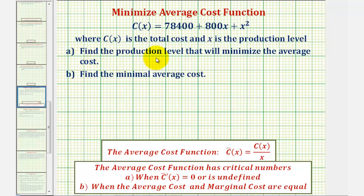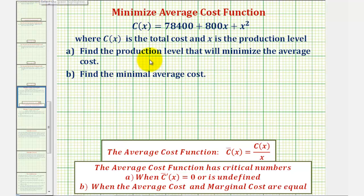For part A, we want to find the production level that will minimize the average cost, and for part B, find the minimum average cost. We need to be careful here because we're asked to minimize the average cost, not the total cost.